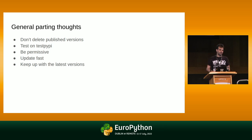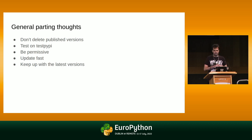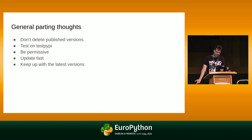Some general parting thoughts and mistakes I made. First: don't delete published versions. One of my first libraries — I thought, 'this is a patch version, why would anyone want to download 0.1.1 now that I have 0.1.2?' So I went to PyPI and deleted the previous patch version. Then I got an email from someone complaining that they couldn't install something they were previously able to install. I tried to re-upload it — you can't. So if you want to delete something, there has to be a very, very good reason, like accidentally including a password. Think very, very hard before deleting a published version.